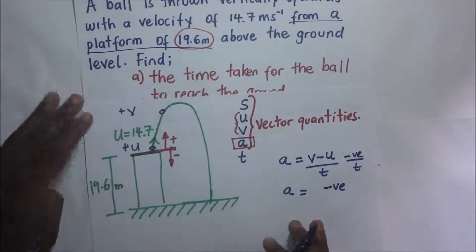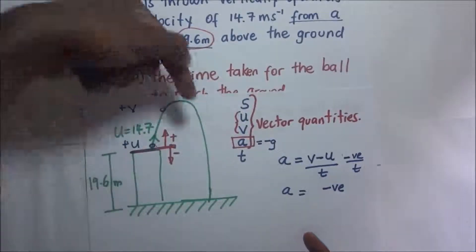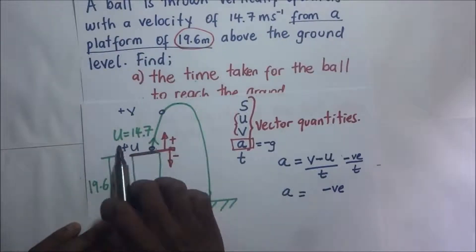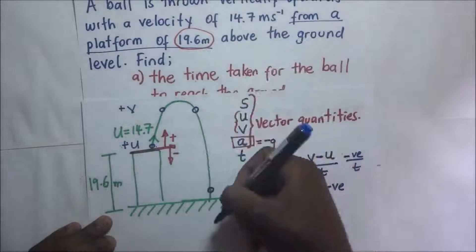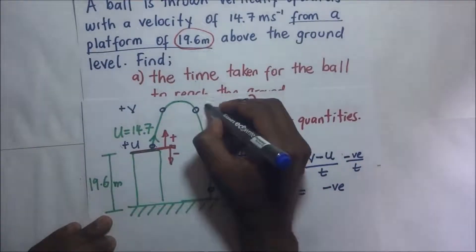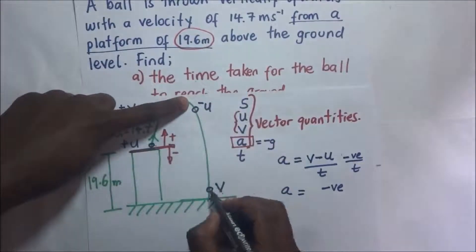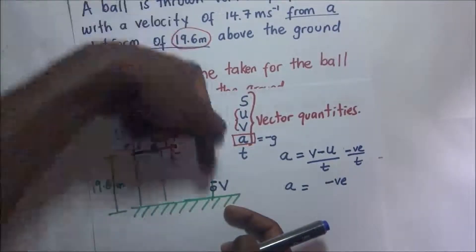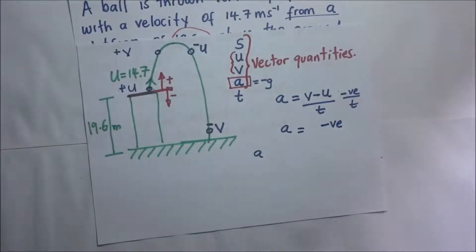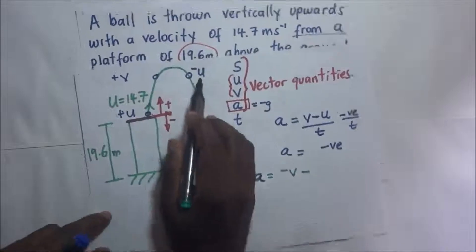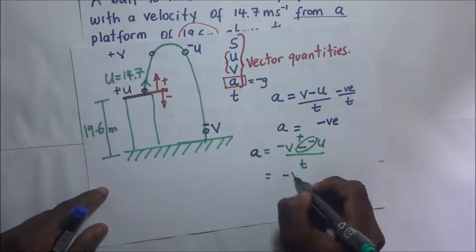For particles under the influence of gravity, acceleration is negative g when moving upward. Now let's look at it when coming back down. As it moves downward, the initial and final velocities are both negative because the direction has flipped. Acceleration equals final velocity (negative v) minus initial velocity (negative u), divided by t. The two negatives become: negative v plus u, over t.